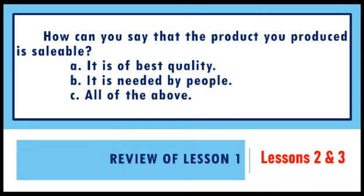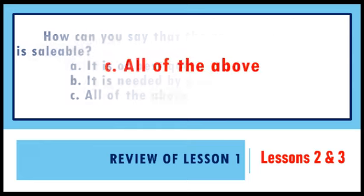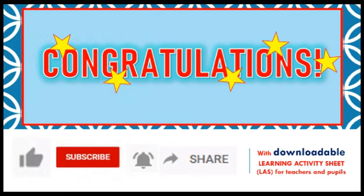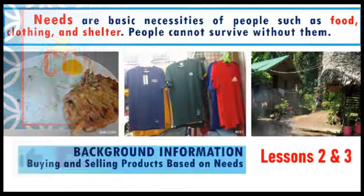Question 3: How can you say that the product you produce is saleable? A. It is of best quality. B. It is needed by people. C. All of the above. What is your answer? If your answer is letter C, good job. You are correct. Congratulations for getting the correct answers. Now, let us talk about the new lesson.